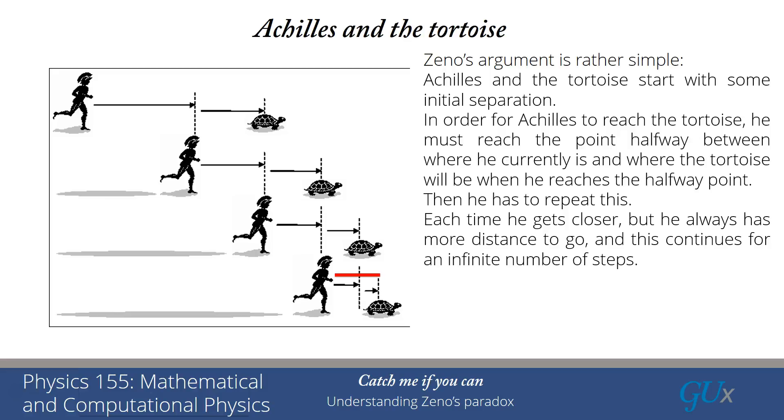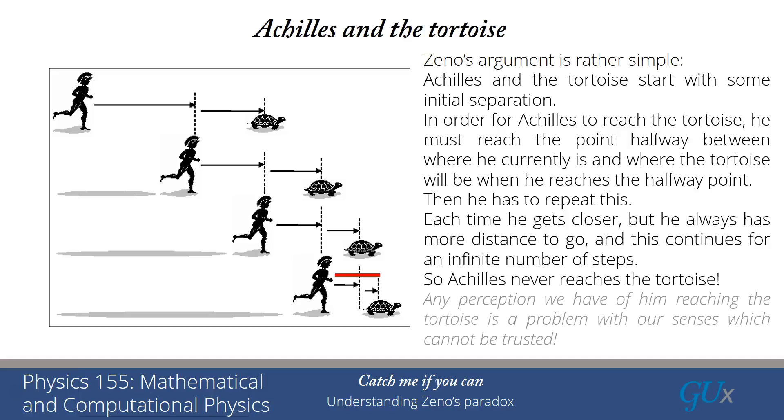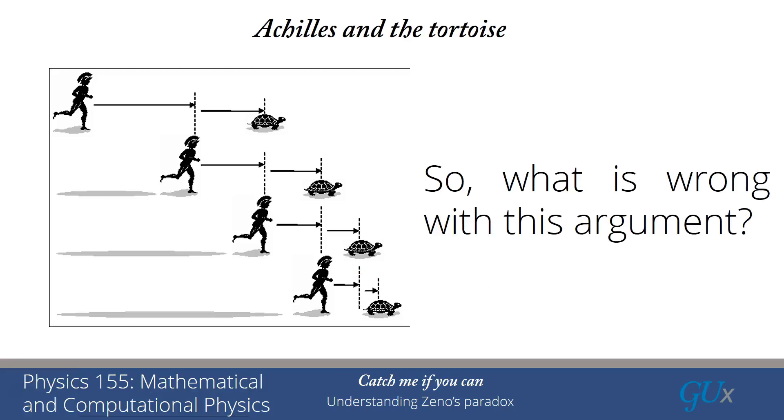So because it continues for an infinite number of steps, he's never going to get there. So he can never pass the tortoise because he'll never actually reach the tortoise. And now here's the interesting thing. What Zeno said was any perception we have of him actually reaching the tortoise is a problem with our senses, which cannot be trusted.